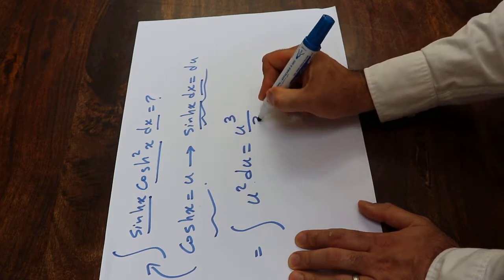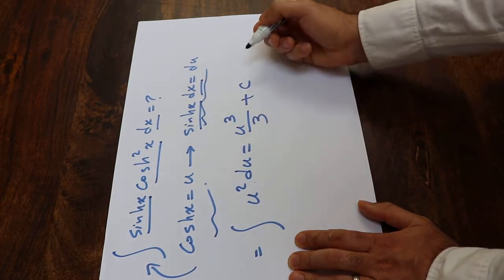we know it is equal to u to the power of 3 divided by 3 plus c, which is the constant of integration.